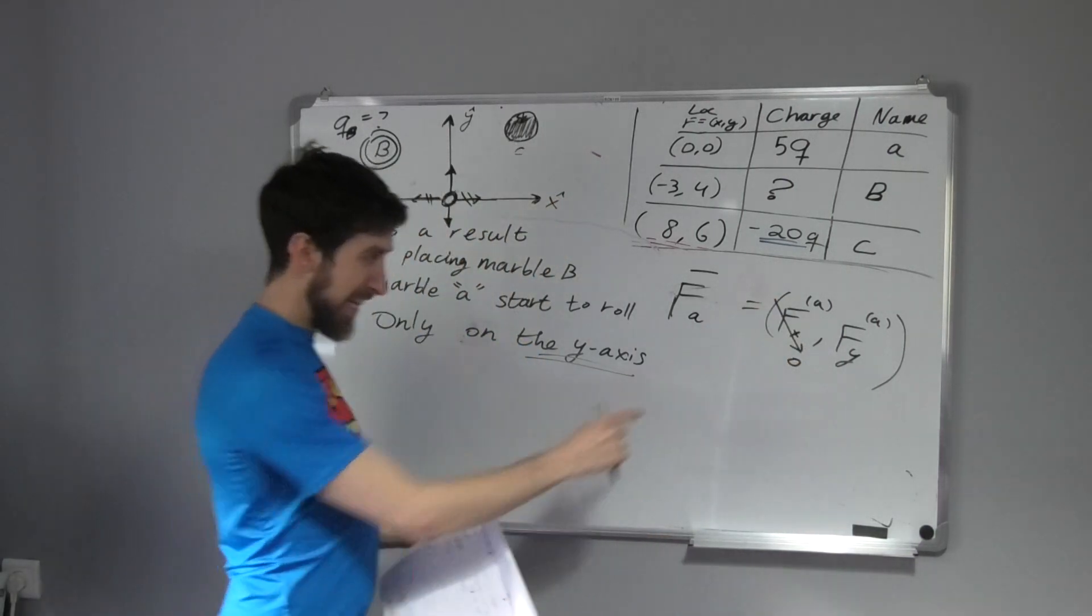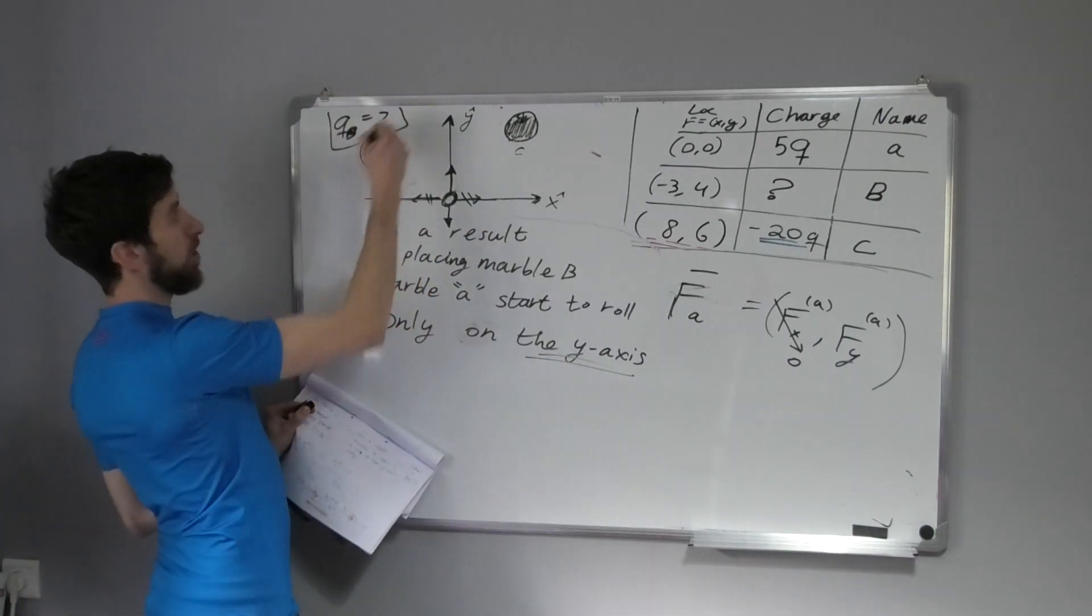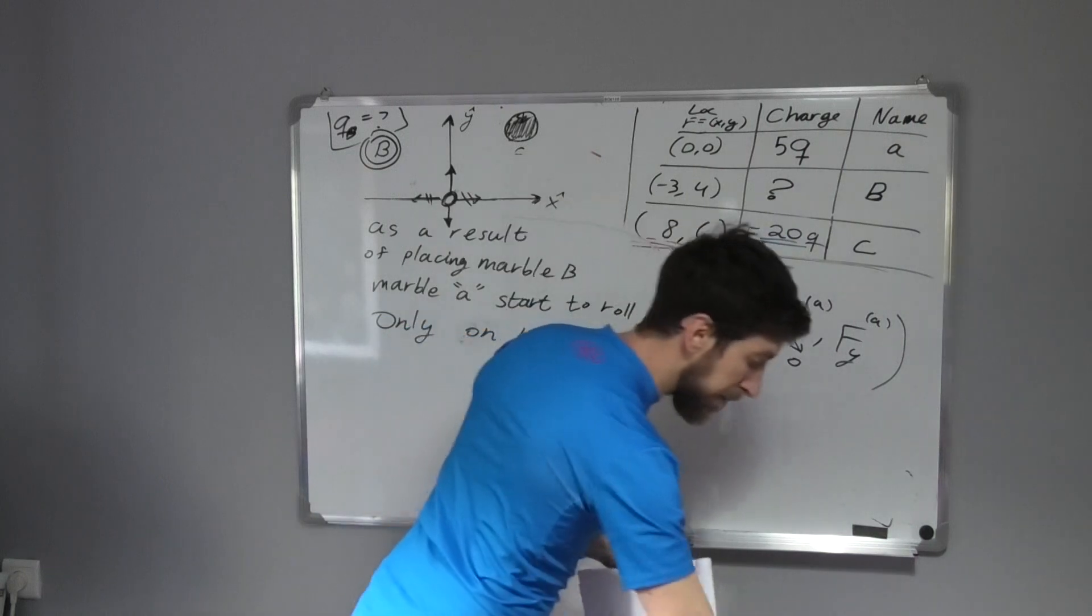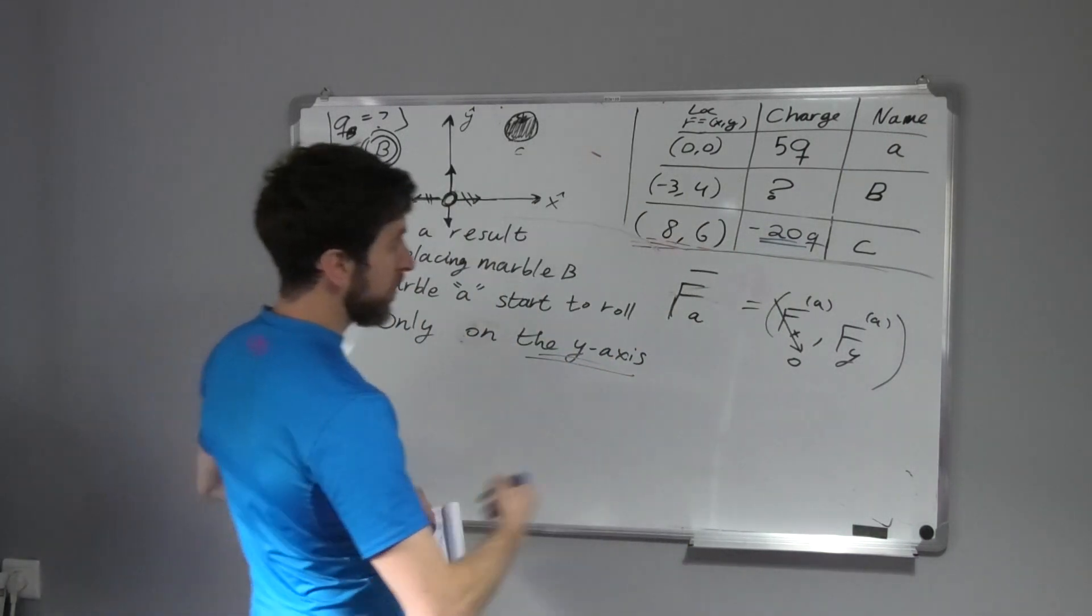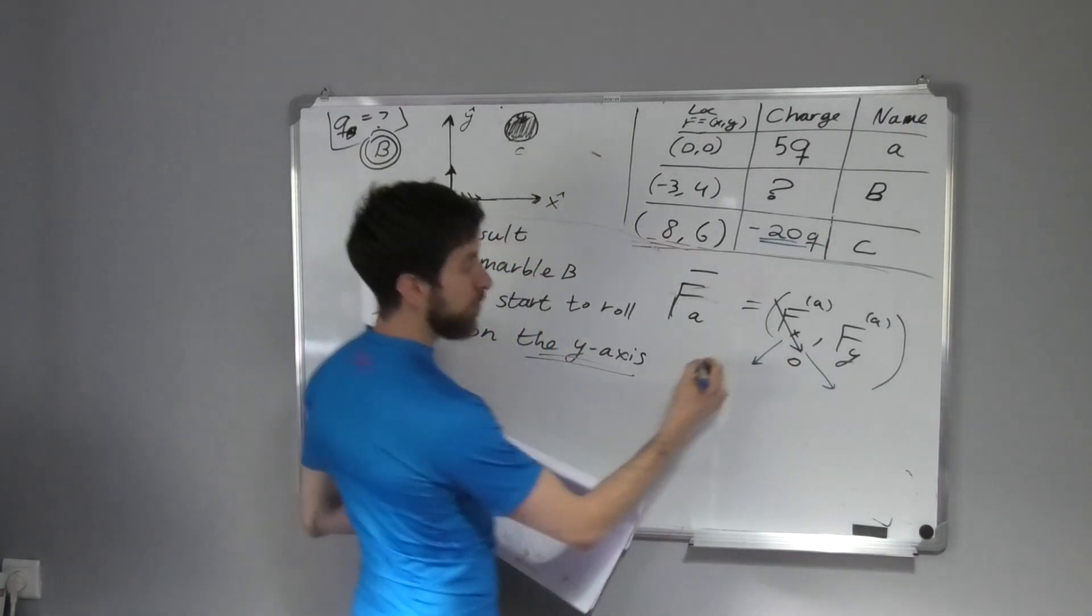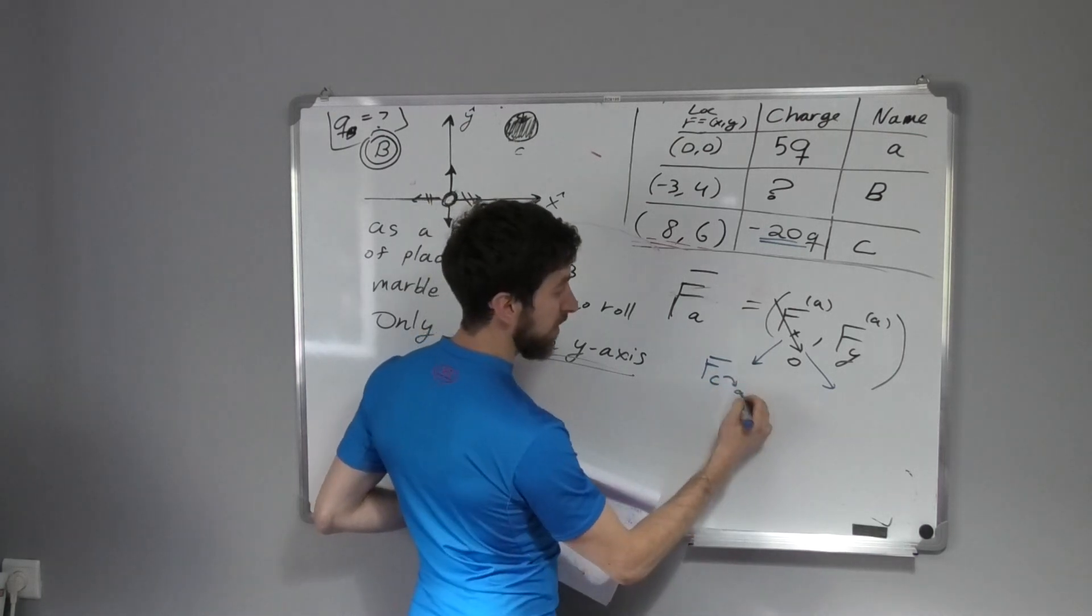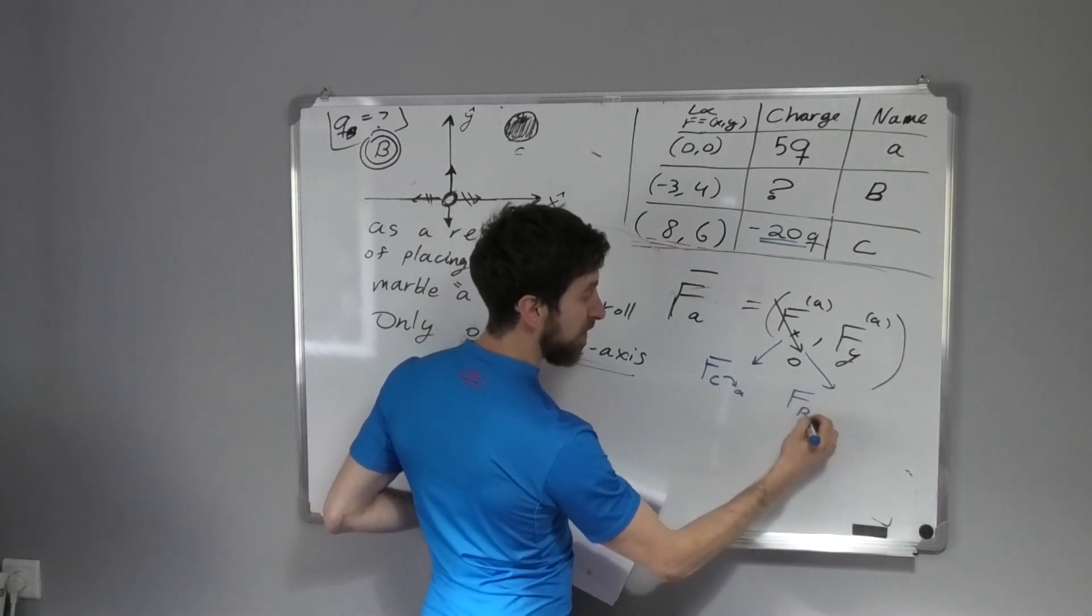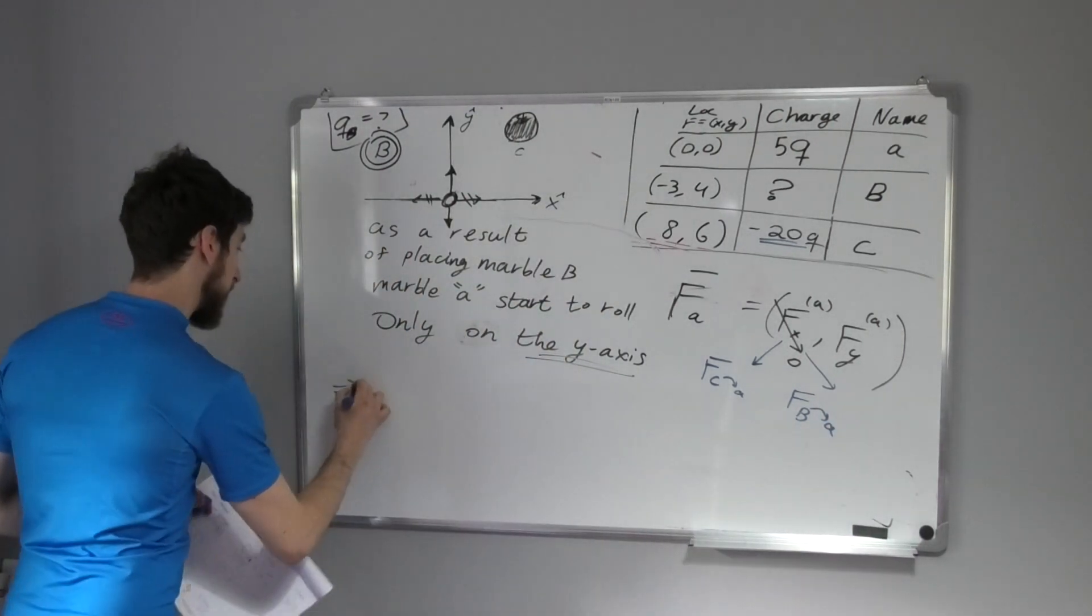I can use this data to solve the question. The question is: what is the charge on B? I know that there are two contributors to this value, which are C on A and this new marble B on A. So I can use this idea.